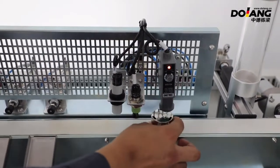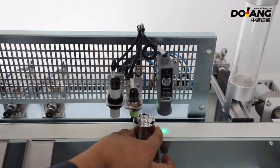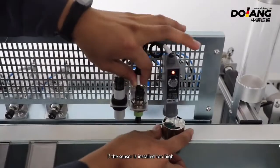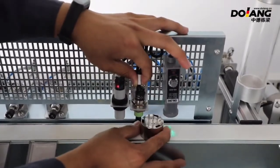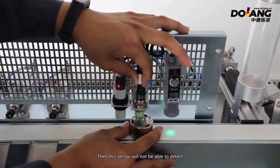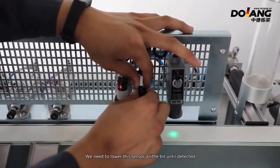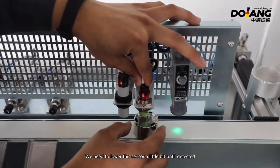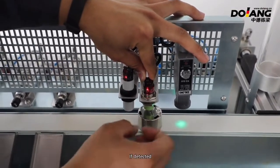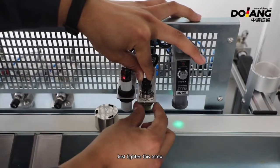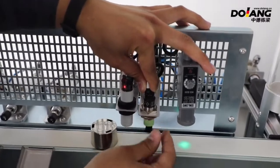How to adjust the sensor? First, put the material block here. If the sensor is installed too high, then this sensor will not be able to detect. How to solve the problem of not detecting the material block? We need to lower the sensor a little bit until detected. If detected, just tighten this screw.